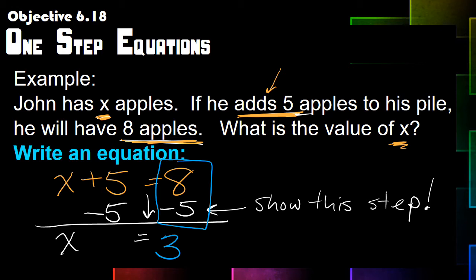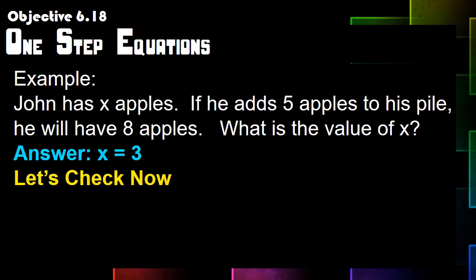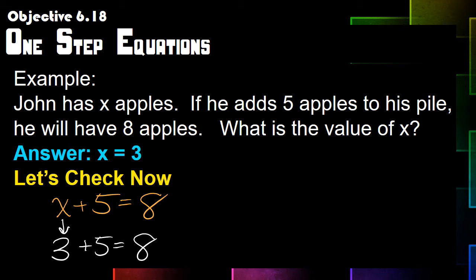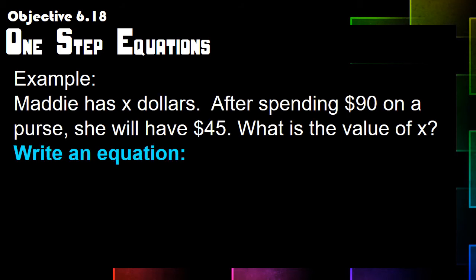Now we need to check our answer. We found that X equals three, so let's rewrite our number sentence: X plus five equals eight. We fill in three for X: three plus five equals eight. The check works out perfectly. Put a check there — Mr. Peterson double-check star — knowing that you double-checked your own work.